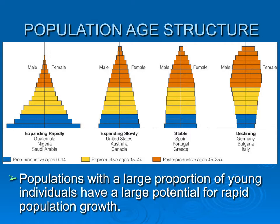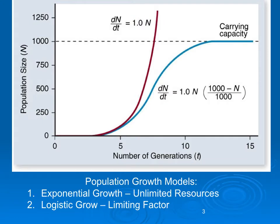Expanding slowly — that's the United States — there are still more young individuals than older individuals. Then you get to population structures that are stable, mostly uniform, with the same number of individuals in each age class. You can actually have population structures that are inverted and likely to decline because there are fewer young individuals than old individuals. These are characteristic age structures that can lead to different population fates.